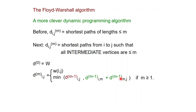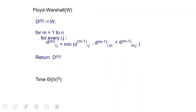The beauty is that this recursion is just constant time. Here is the whole algorithm in pseudocode: start with the matrix D superscript 0 as just the weight function, then for M going from 1 to N, for every I and J iterate this constant-time recursion, and return the final matrix. The time for this is clearly just V cubed.